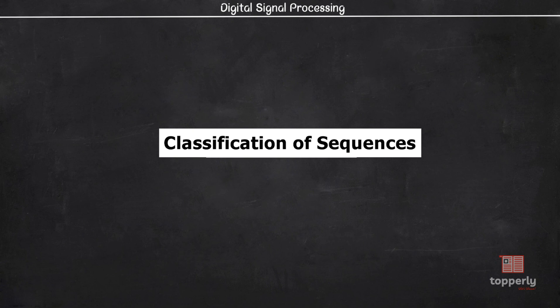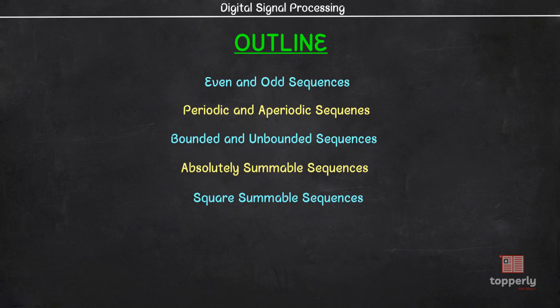Hey everyone, welcome back to DSP lectures. So far we were familiarizing with sequences, and in this video we will continue on sequences, specifically classification of sequences. A discrete time signal can be classified in various ways: based on symmetry of samples with respect to time index n equal to zero, based on properties like periodicity, whether they are bounded or unbounded, absolutely summable, or square summable sequences. We will discuss each of these classifications in detail.